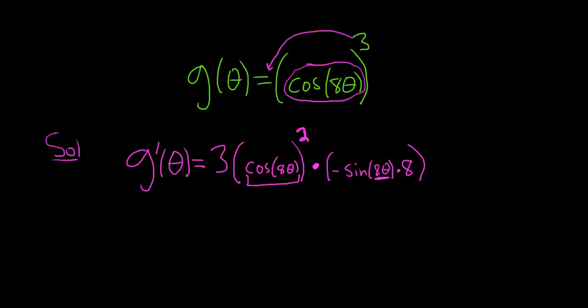So the last thing to do is just to clean this up a little bit. I'm going to put the 8 and the 3. I'm going to multiply those to get 24, and put the negative out front, so negative 24. I'm also going to put the sine function out front, so sine of 8 theta.